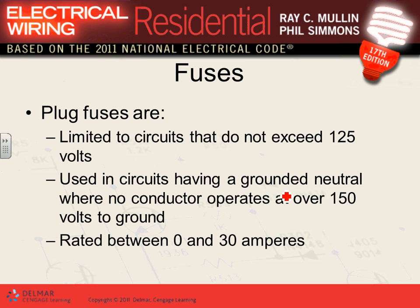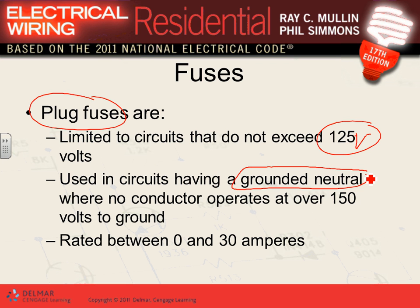Now, fuses. There are plug fuses — the little screw-in fuses. We use them typically to protect equipment like motors, and they're rated not to exceed 125 volts. They are used in a grounded system when the conductors are operating at not over 150 volts to ground, and the amps are limited to 30 amps.